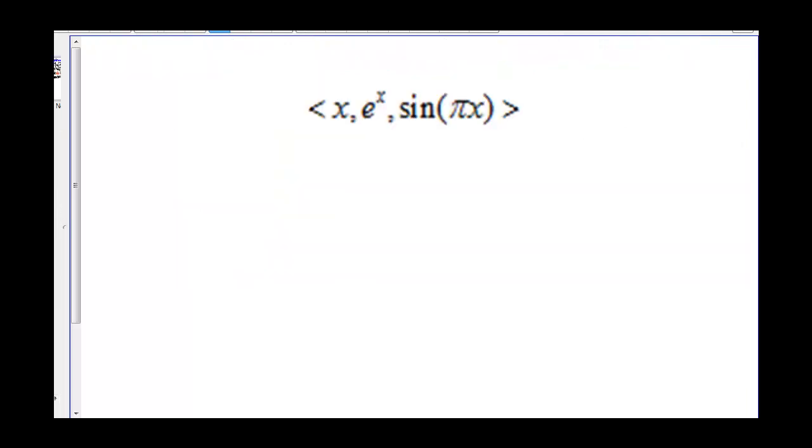So let's look at an example. We have the vector function ⟨x, e^x, sin(πx)⟩. Let's see if we're continuous at the point 0.